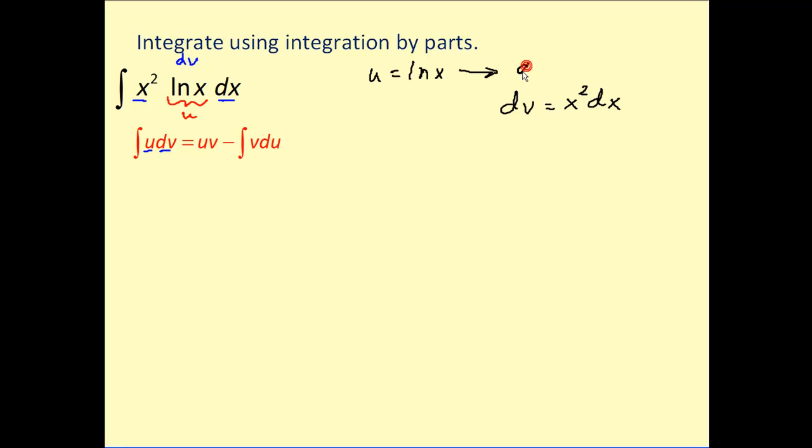So in order to find du we have to find the derivative of natural log x, which is one over x times dx. And when we integrate both sides of this equation we're going to get v is equal to x cubed divided by three.